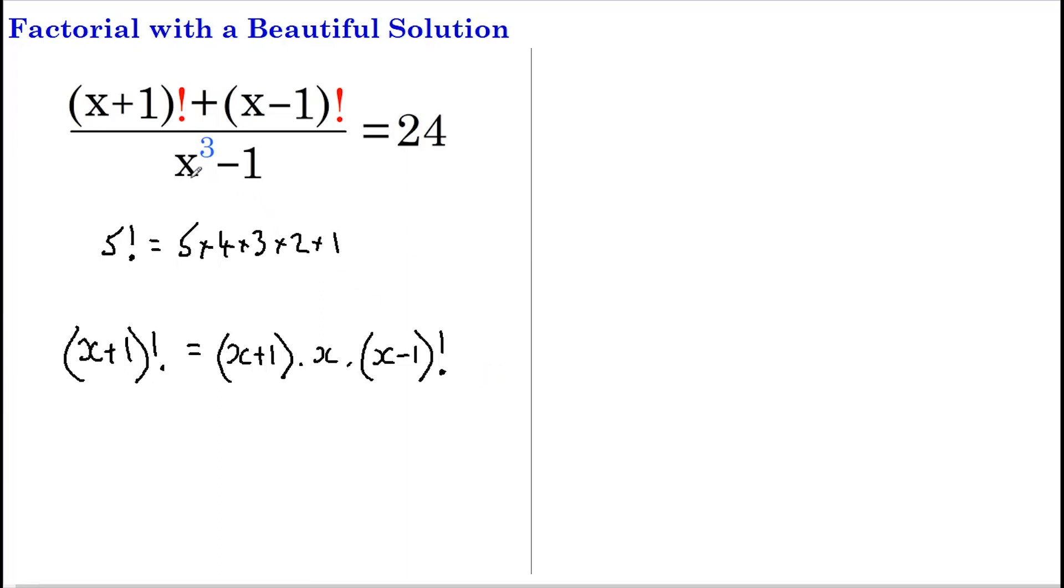Next, we're going to rewrite x cubed minus 1. Another way of writing x cubed minus 1 is (x-1) multiplied by (x squared plus x plus 1). This is just one of those expansions that you need to know.